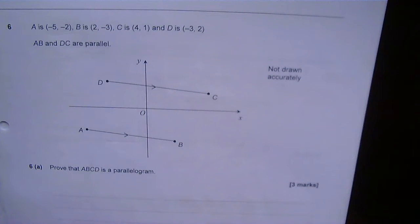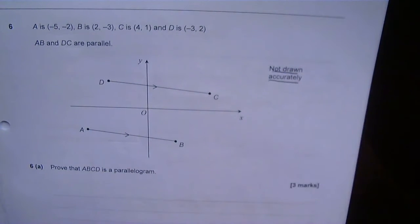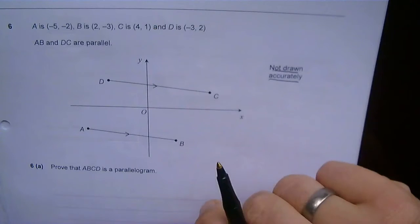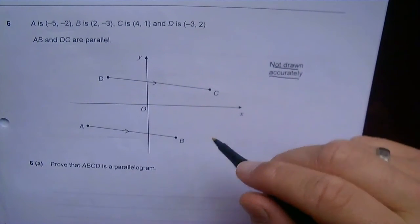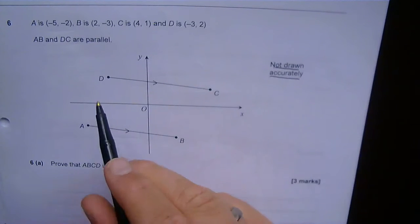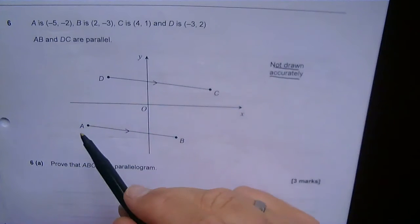Note, it's not drawn accurately. These things are never drawn accurately in the tests. So for that to be a parallelogram, we need to show that there are two pairs of parallel lines. We've got one pair of parallel lines. We need to show that these two are also parallel.